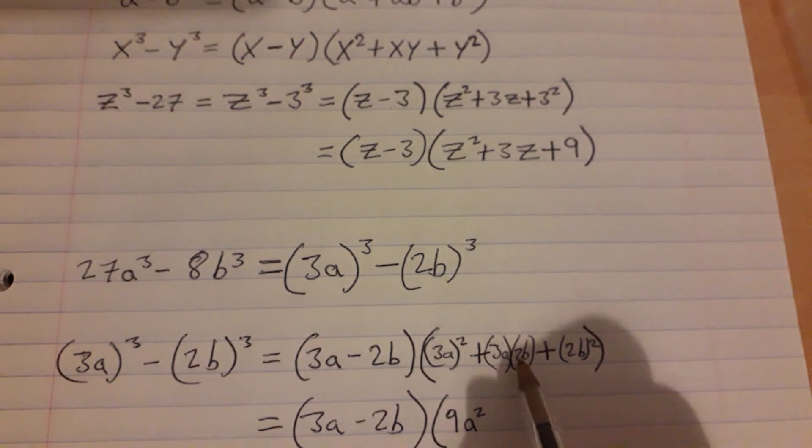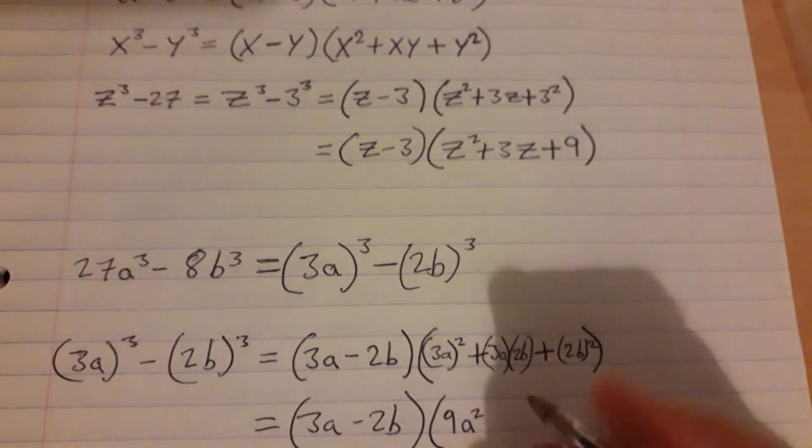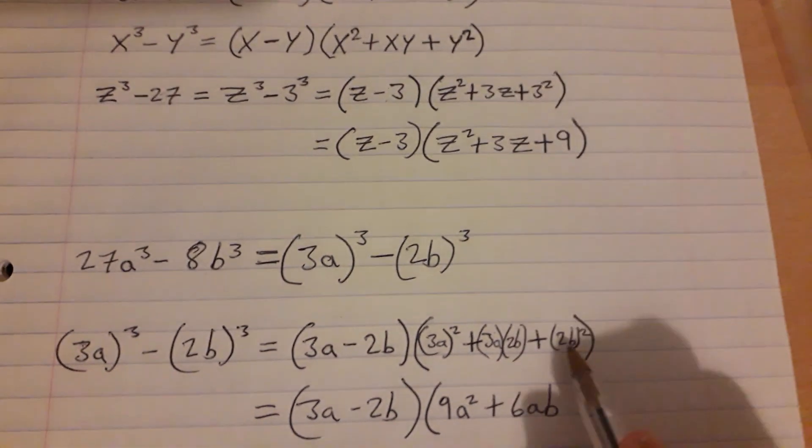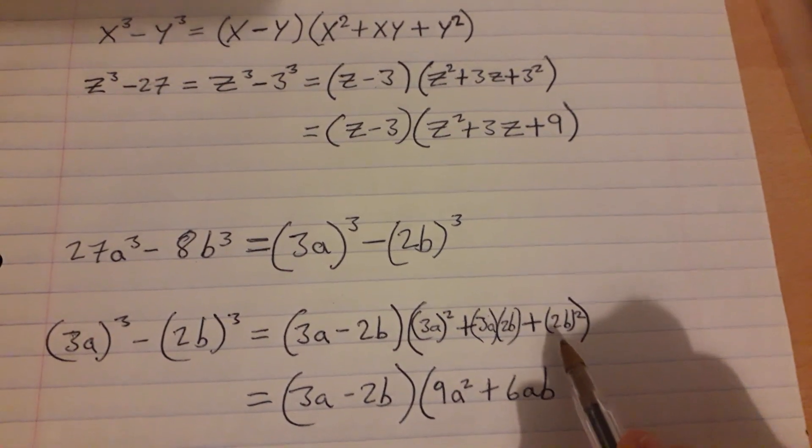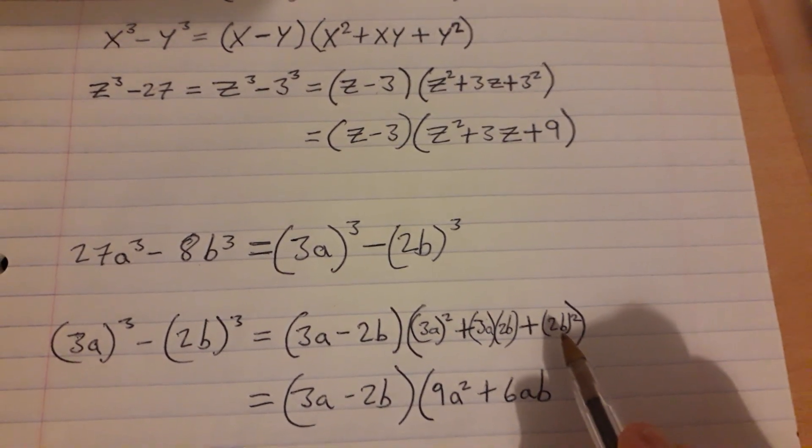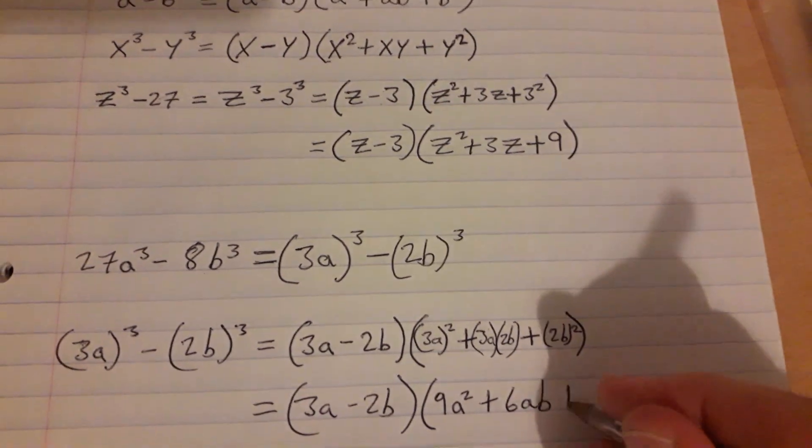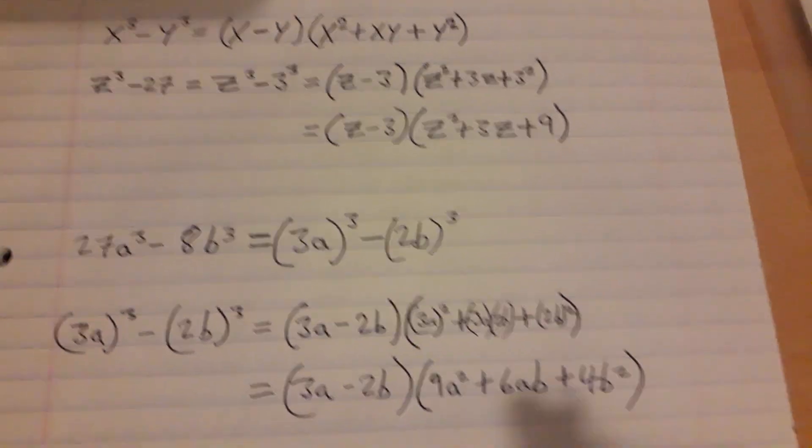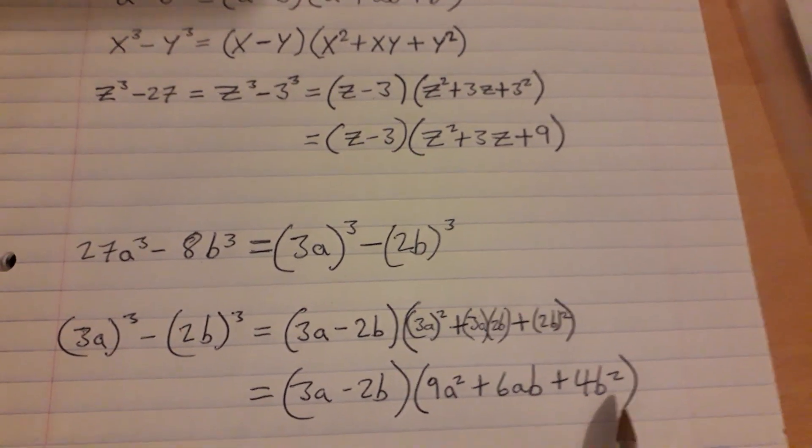3a by 2b, well 3 by 2 is 6ab, so plus 6ab. And then 2b by 2b, which is 2b squared, well 2b by 2b is 4b squared, so plus 4b squared.